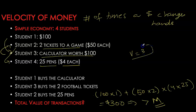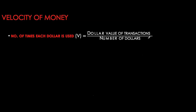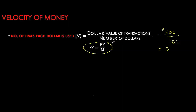Velocity is the average number of times a dollar changes hands. We can rewrite velocity formally as the dollar value of transactions divided by the number of dollars. In our example, the dollar value of transactions was $300 and the stock of money was $100, giving a velocity of three — exactly equal to the number of transactions. In aggregate form, P times Y is the value of transactions, where Y is real GDP, P is the price level, and M is the money supply, which was $100 in our example.